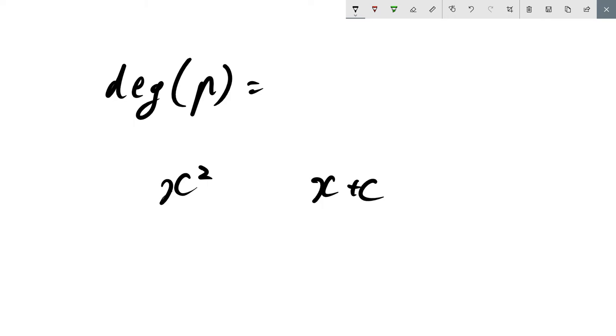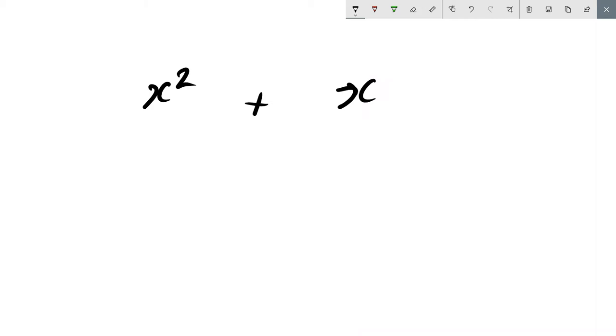Now what are some of the things that we can actually do with these polynomials? Well we can add them. So let's add two polynomials: x squared and x. Two polynomials, what's going to happen when I add them? That's it, we've done it. We can add them together.